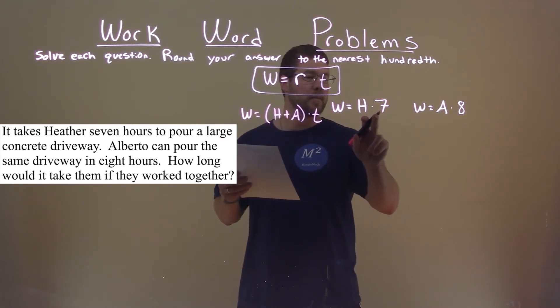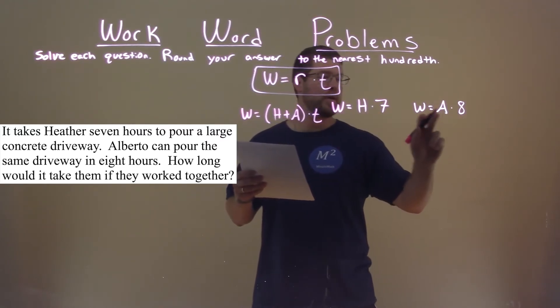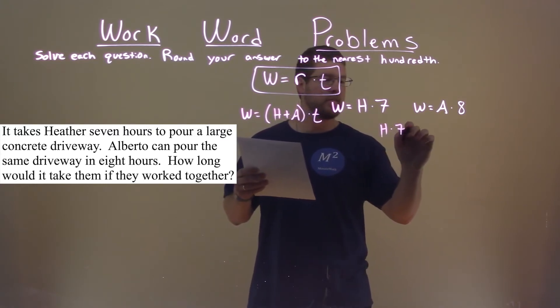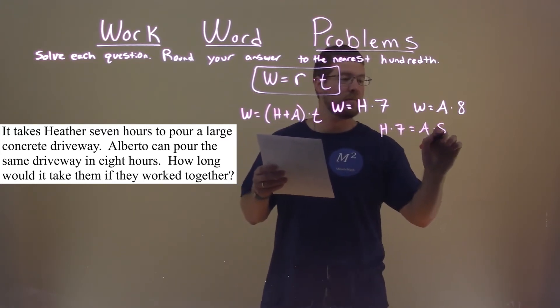So what can we do? H times seven is equal to W, and A times eight is equal to W. So we can set them equal to each other. H times seven equals A times eight.